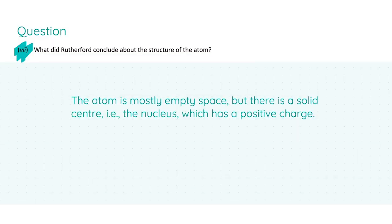In part 7, we're going to interpret these observations made in part 6 in order to conclude the structure of the atom. Rutherford came to the conclusion that the atom is made mostly of empty space, but there is a solid center, the nucleus, which has a positive charge. Stating this conclusion in its entirety will yield three marks.